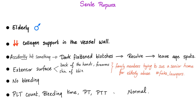Senile purpura — old grandpa. There is decreased collagen support in the vessel wall because grandpa is so old. As you get older, everything deteriorates. Grandpa accidentally hits something and gets dark flattened blotches on his skin. Then they resolve, but they leave age spots.